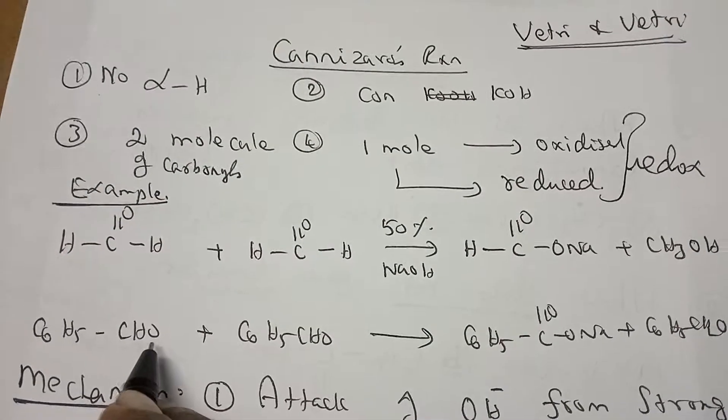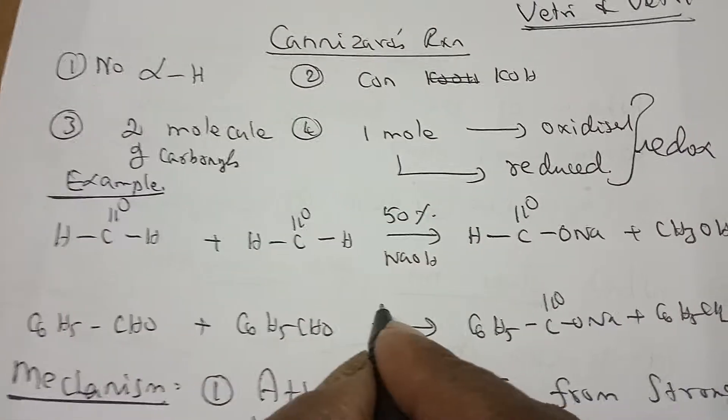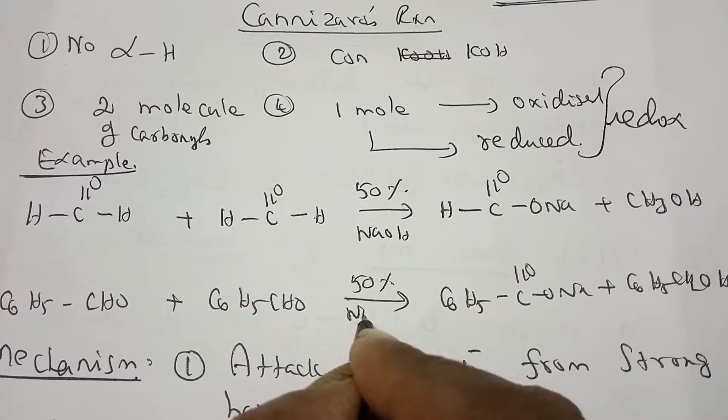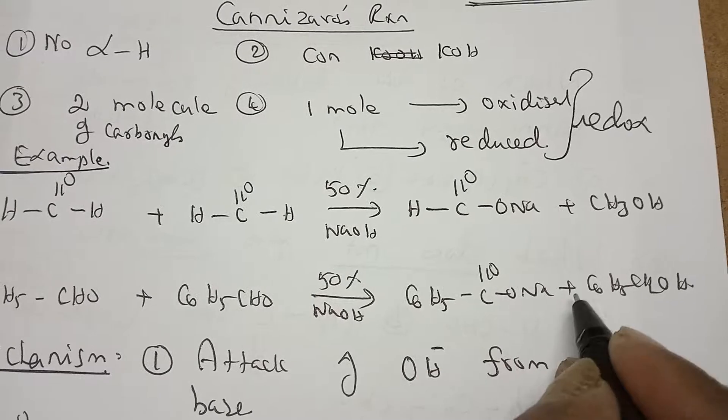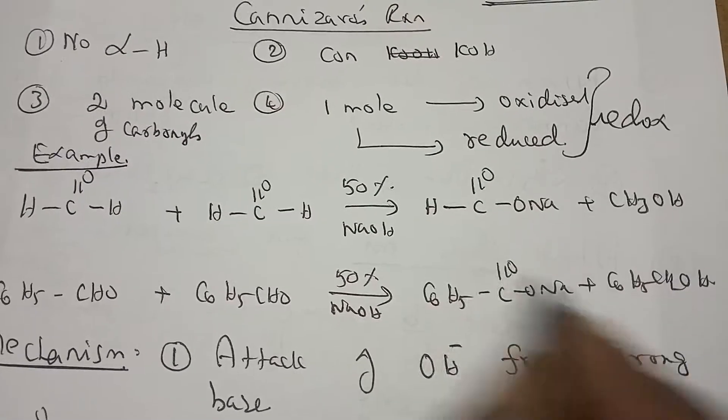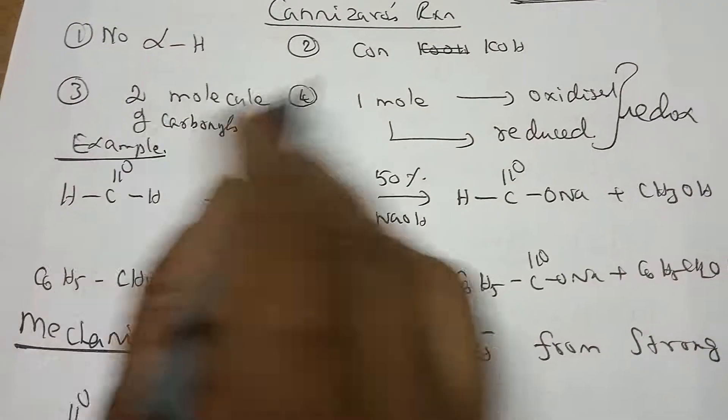Same, another example: benzaldehyde with another molecule of benzaldehyde, 50% sodium hydroxide or potassium hydroxide gives sodium benzoate and benzyl alcohol. These are the two examples for Cannizzaro reaction.